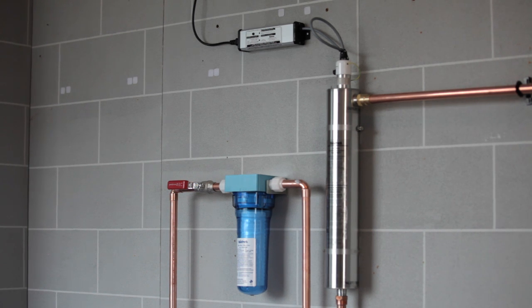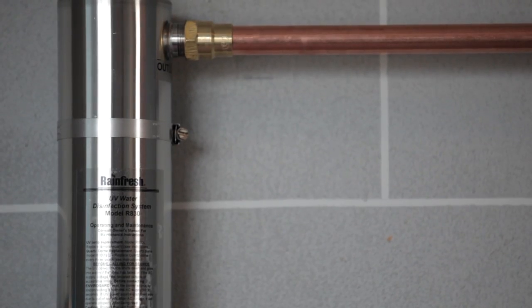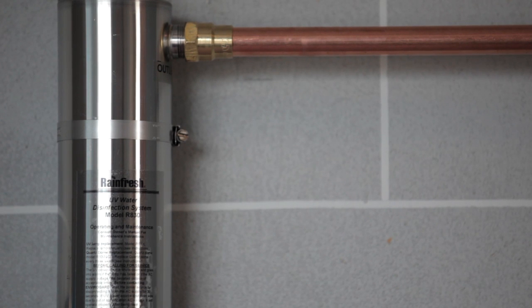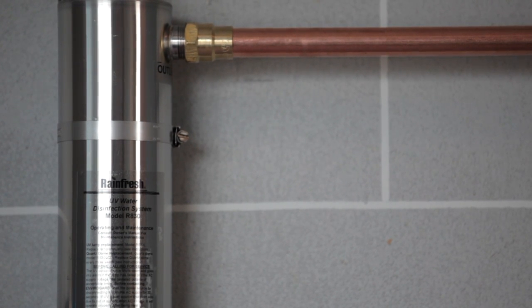Rainfresh UV System disinfects water for the whole house or cottage by using the natural, non-chemical disinfection properties of ultraviolet light.